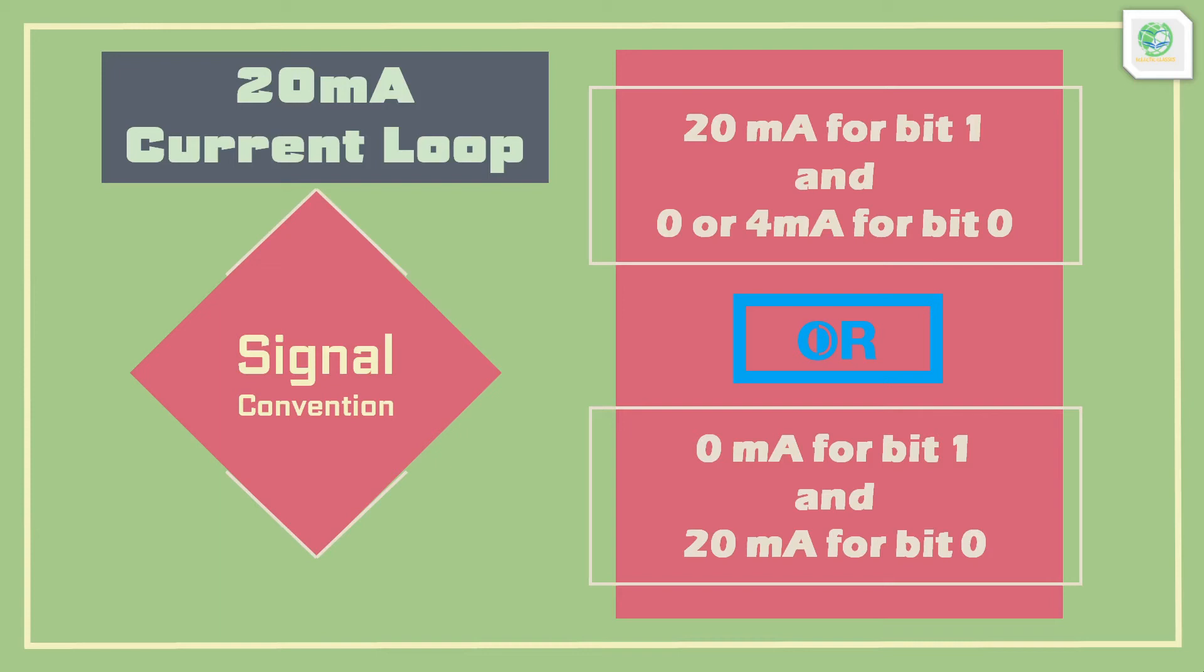This was done so that current is always flowing in the line and any long absence of current could be understood as a line cut. Even the first case with 20mA for bit 1 and 4mA for bit 0 can easily indicate a line cut as no current will flow even on 0 bit.